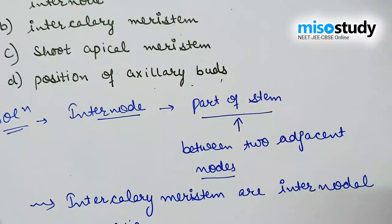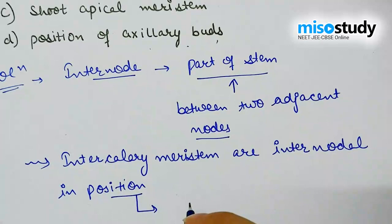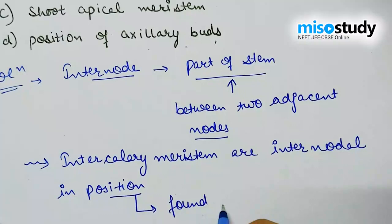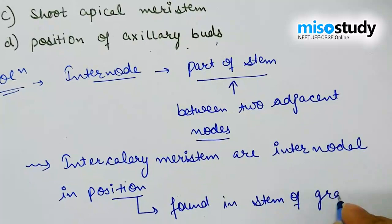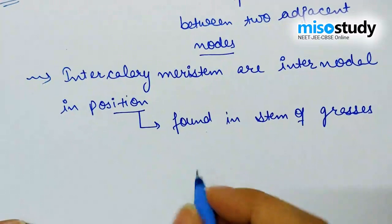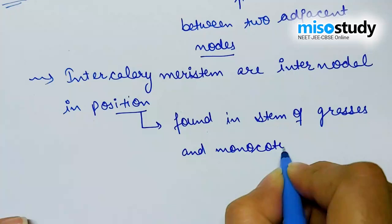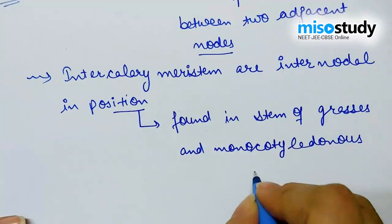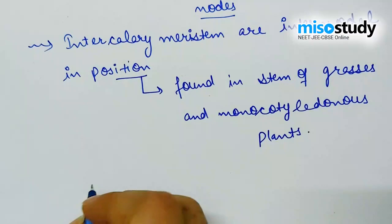These intercalary meristems are found in the stem of grasses and monocotyledon plants. Always remember — they are present in monocots, not in dicots.